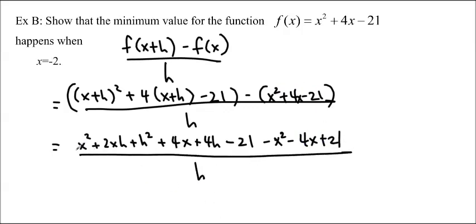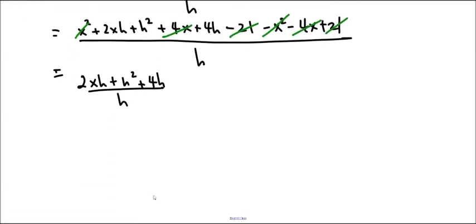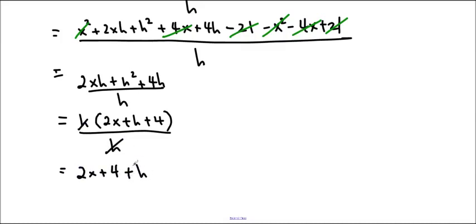And we can see that the x squareds are going to cancel each other out. The 4x's are going to cancel each other out. And the negative 21 cancels out as well. So that we get 2xh + h² + 4h over h. Now we can common factor out an h. And cancel. So we get 2x + 4 + h. And that h is going to be so small that it disappears. So it's really 2x + 4. That is the instantaneous rate of change.